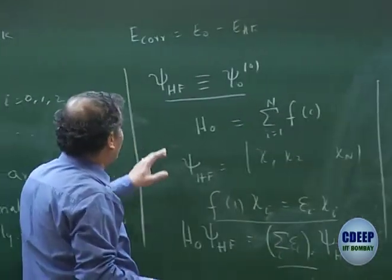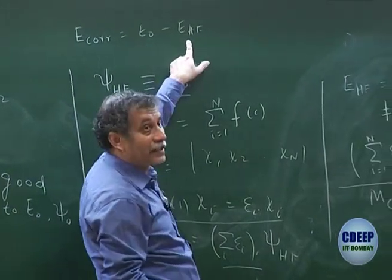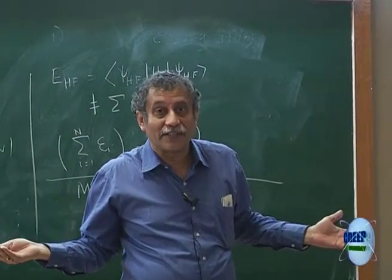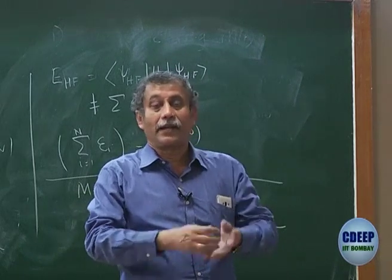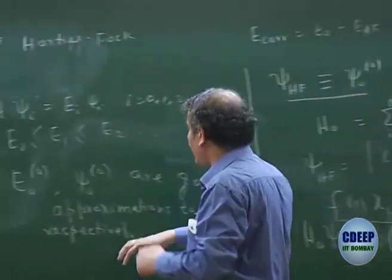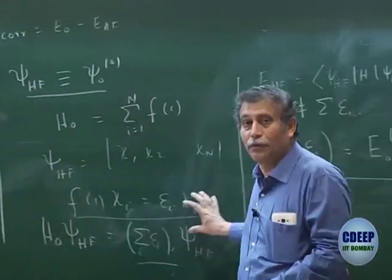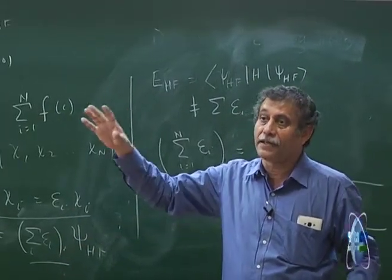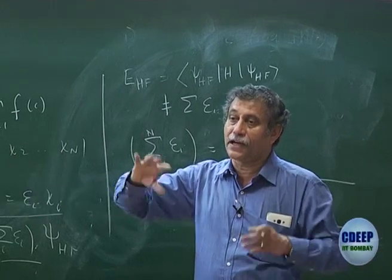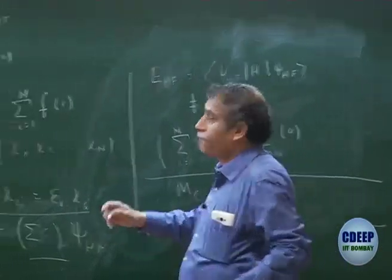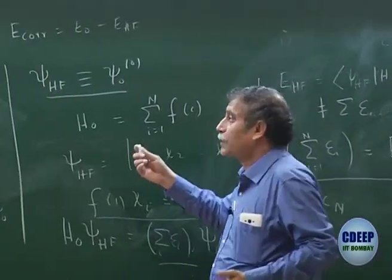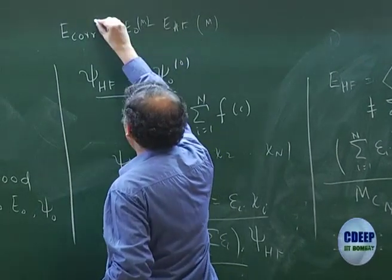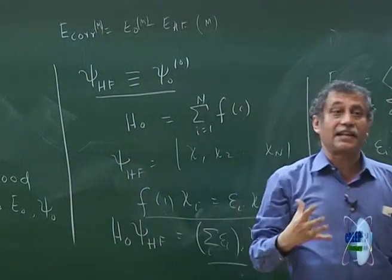The point to note is that this is the exact energy and this is the Hartree-Fock energy, but what is the Hartree-Fock energy? We cannot get the exact Hartree-Fock energy because exact Hartree-Fock energy would be obtained if I solve this exactly, which I cannot do for a molecule because I am introducing a basis. So even the Hartree-Fock has been solved in an approximate manner — everything that we have been talking about is in a finite basis.